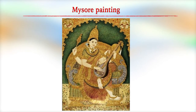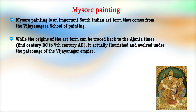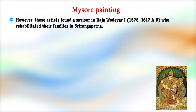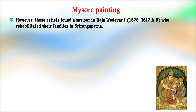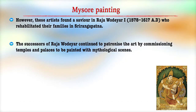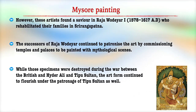Mysore painting is an important South Indian art form that comes from the Vijayanagara school of painting. While its origin can be traced back to the Ajanta times, it flourished under the patronage of the Vijayanagara empire. The art form spread to places like Mysore and Tanjore where painters had migrated after the fall of the empire, and these artists found further patronage in the royal court at Srirangapatnam. The successor of Raja Wodeyar patronized the art by commissioning temples and palaces to be painted with mythological scenes, and the art form continued to flourish under the patronage of Tipu Sultan as well.